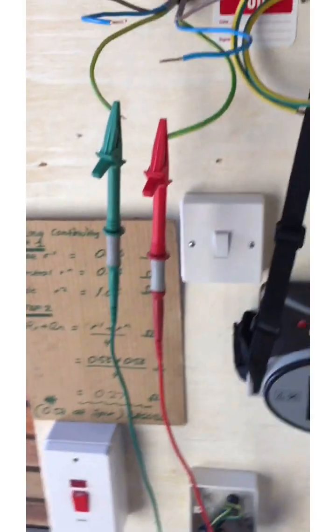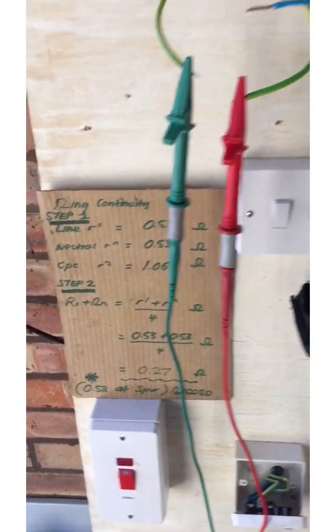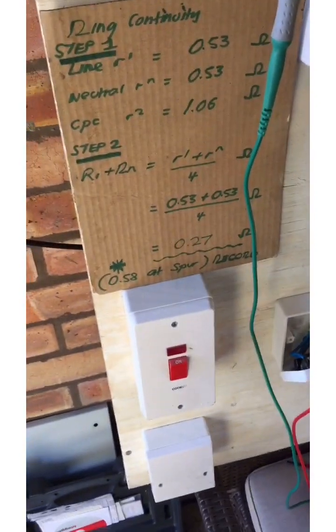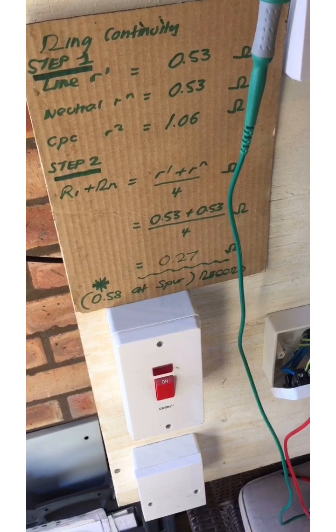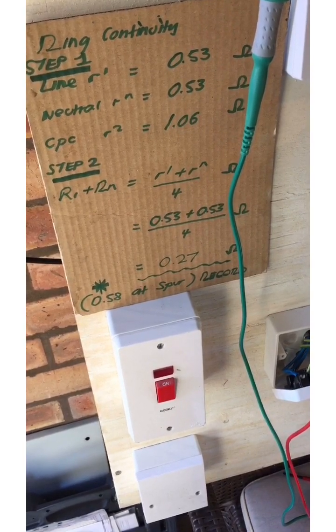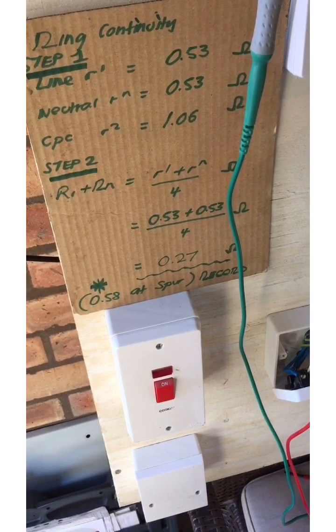So step one, end-to-end resistance. They're the values that I got previously, not a million miles away from what I got second time round. So the line was 0.53, neutral 0.53, and the CPC 1.06.